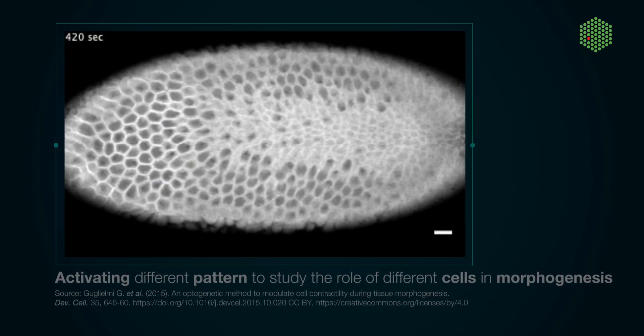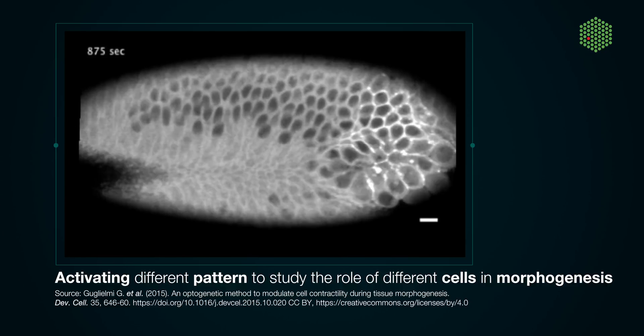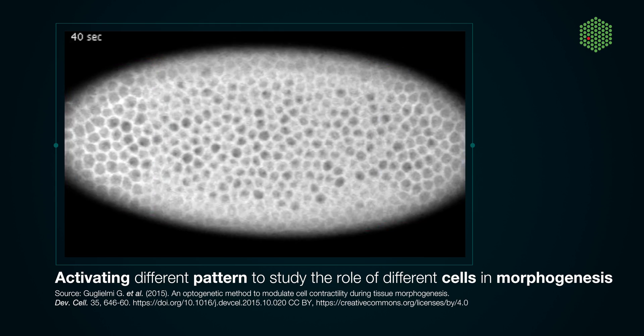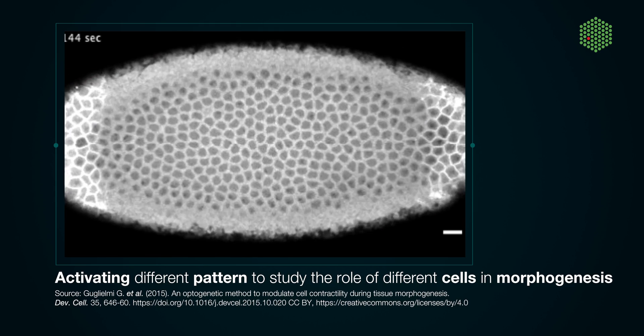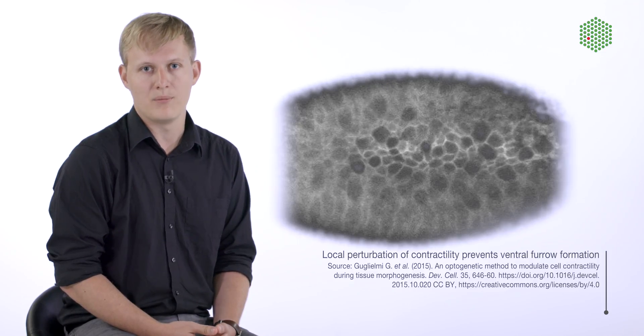With the specificity we can achieve with optogenetics, it is even possible to activate the embryo in different patterns. This allows us to study the function of different groups of cells in the tissue and their contribution to morphogenesis. Our experimental results suggest that contractility is essential for driving the cell shape changes that lead to the invagination of cells and folding of the embryonic tissue. The light-induced recruitment of OCL-Cry2 blocks contractility and folding of the embryonic tissue in the activated area of the embryo, with strong impact on neighboring cells and the embryo as a whole.